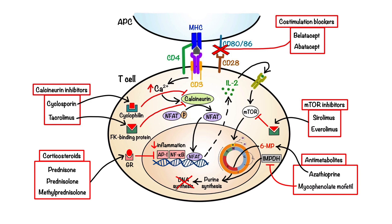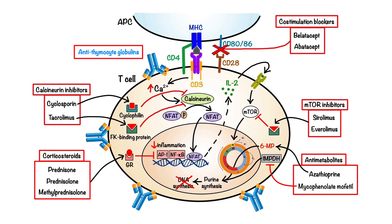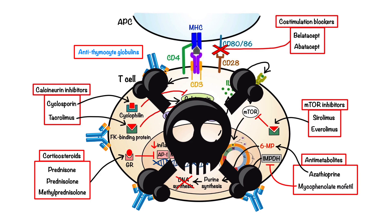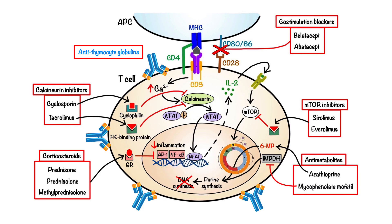Finally, moving on to our last class of immunosuppressants: antibodies. For the purpose of this lecture we will focus on the two most commonly used to prevent transplant rejection. The first is anti-thymocyte globulins, which consist of polyclonal antibodies that bind to a wide variety of proteins on the surface of T cells, leading to cell death via complement-mediated cytotoxicity or apoptosis. The second is basiliximab, a monoclonal antibody that binds to the interleukin-2 receptor with similar affinity as interleukin-2, thereby effectively competing with interleukin-2 and subsequently inhibiting interleukin-2-driven T cell proliferation.